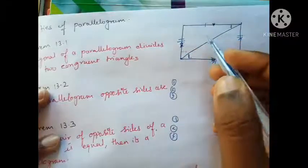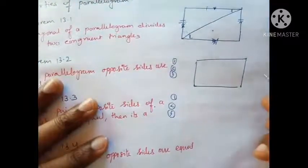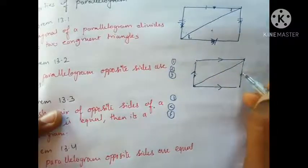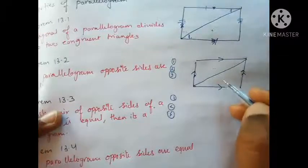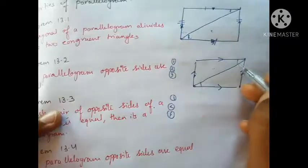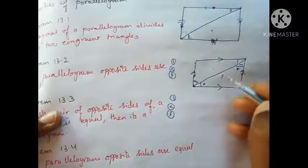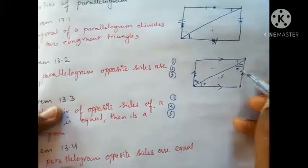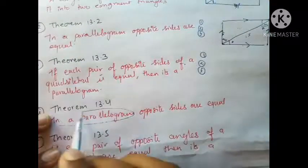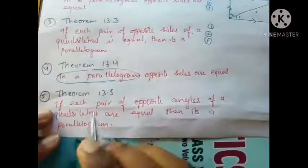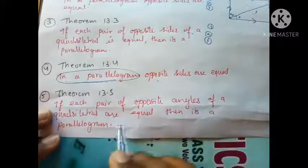Theorem 13.4 states: in a parallelogram, opposite angles are equal. When a parallelogram is given, opposite sides are parallel. Using the diagonal and proving congruent triangles, I can show this angle equals this angle and this side equals this side. Theorem 13.5 states: if each pair of opposite angles of a quadrilateral are equal, then it is a parallelogram.